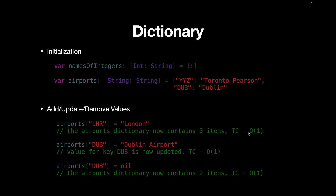Adding a new key-value pair to a dictionary takes O(1) time. To update an existing value, just assign a new value to an existing key — for example, airports["DUB"] = "Dublin Airport" updates the value for DUB. To remove a key, simply assign it nil and it will be removed. All these operations — add, update, and remove — take O(1) time complexity, making Dictionary very efficient.